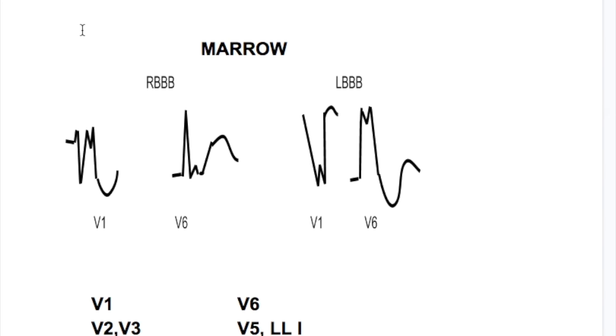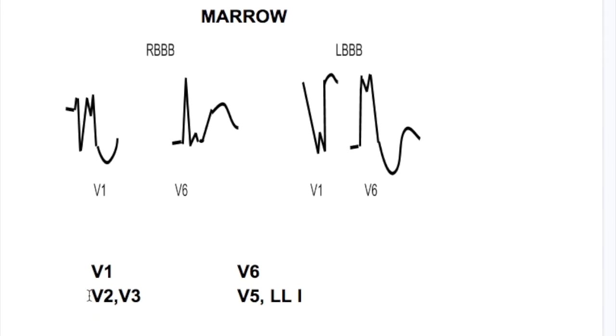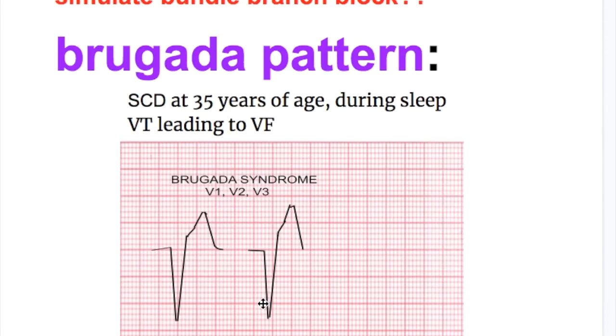And what are the features of the right bundle branch block? The word marrow denotes the features. First letter M indicates that there is an M-notch in the lead V1 and a W-notch in lead V6 in right bundle branch block. And the T is inverted in lead V1, the anterior lead. Inverted T goes with M, as I already told in the left bundle branch block. And the other leads which have features of the right bundle branch block are same as the anterior lead in the left bundle branch block: the lead V1 and V2, and with the lead V6 are chest lead V5 and the long lead I.